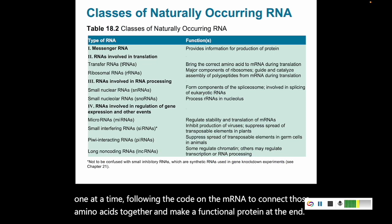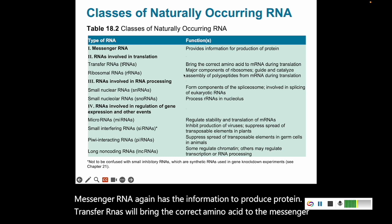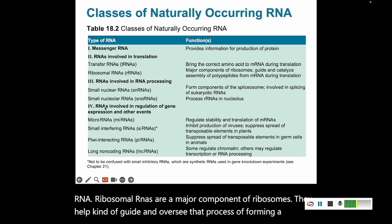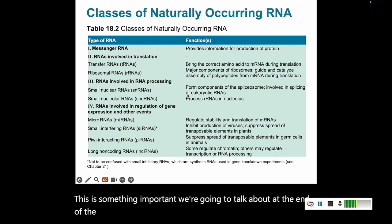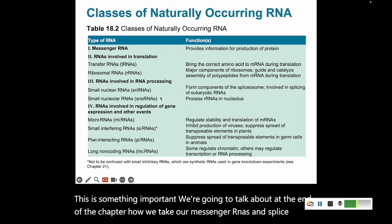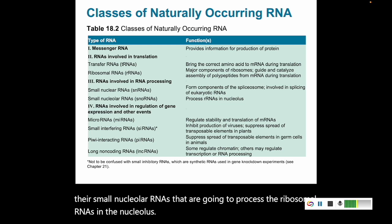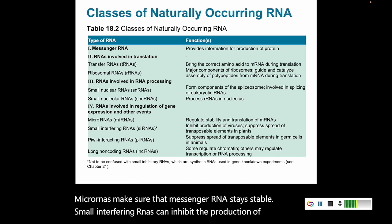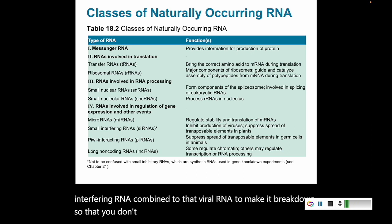There are some different classes of naturally occurring RNAs. Messenger RNA has the information to produce protein. Transfer RNAs bring the correct amino acid to the messenger RNA. Ribosomal RNAs are a major component of ribosomes and help guide the process of forming a polypeptide. There are also small nuclear RNAs, which form components of the spliceosome — important for how we take our messenger RNAs and splice them. Micro RNAs make sure that messenger RNAs stay stable. Small interfering RNAs can inhibit the production of viruses — when a virus brings its RNA into the cell, small interfering RNAs bind to that viral RNA to make it break down so that the virus doesn't produce more viruses.